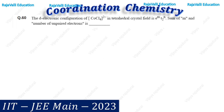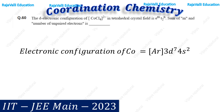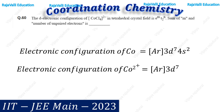Now we have the oxidation state of cobalt as +2. Next, we find the electronic configuration of Co²⁺. The electronic configuration of cobalt is [Ar] 3d⁷ 4s². For Co²⁺, we remove 2 electrons from the valence 4s² orbital. So the electronic configuration of Co²⁺ is [Ar] 3d⁷.